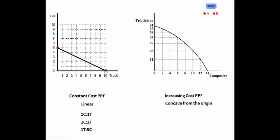Alternatively, 1 truck is equal to 3 cars — so for every truck that you give up, you could produce an additional 3 cars.